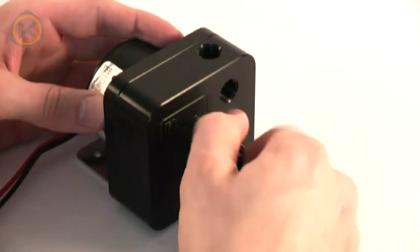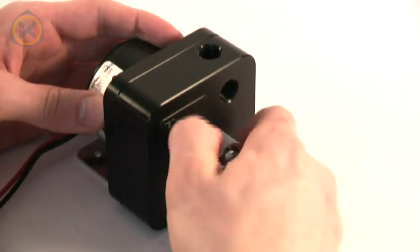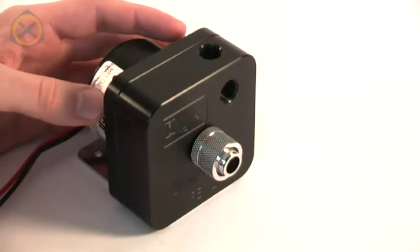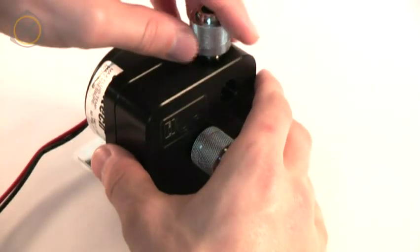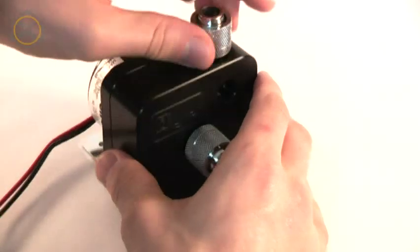The replacement top offers the benefit of quarter-inch threads so that any type of fitting for any tubing size can be installed. With the original top, only tubing sizes compatible with its plastic barbs can be used.